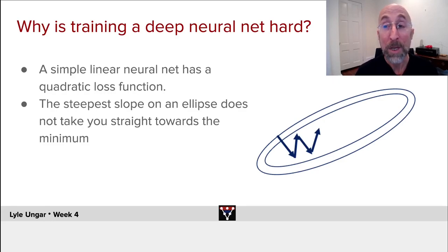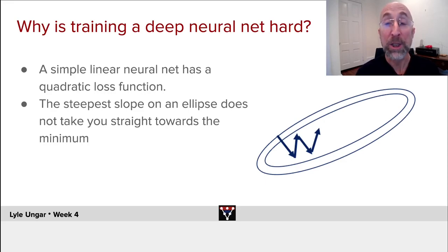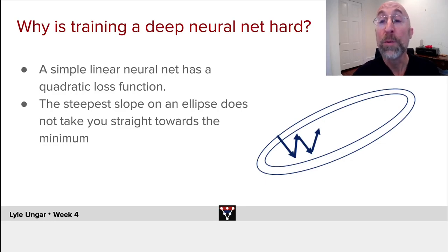That doesn't sound so bad in two dimensions, but in very high dimensions there's lots of zigging and zagging and not enough movement in the direction you actually care about. So this week we'll figure out how to fix gradient descent so there's less wiggling back and forth and more movement toward the direction we want to go.